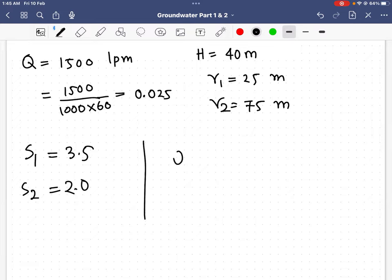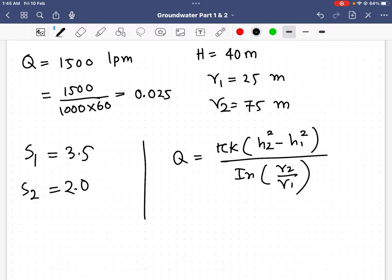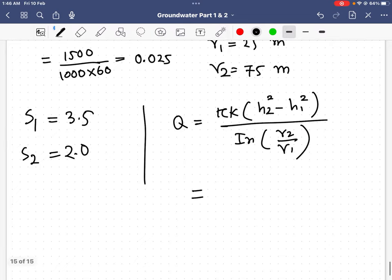Q equals pi K times (h2 squared minus h1 squared) divided by ln(r2 divided by r1).